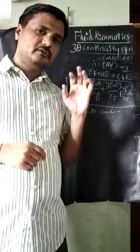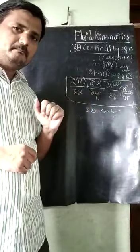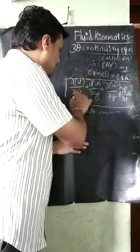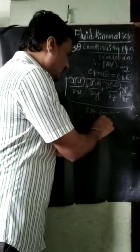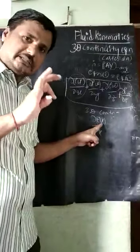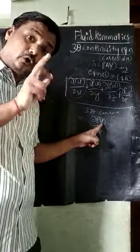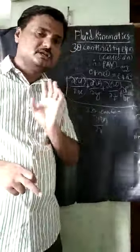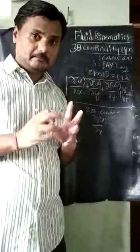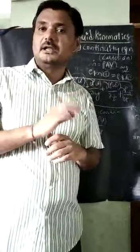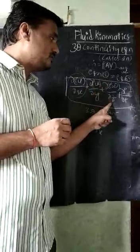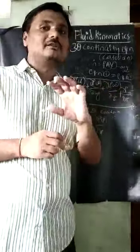If we observe this equation more deeply, take the term ∂(ρu)/∂x. The velocity u along the x direction is changing, and also the density of the fluid is changing in this equation. Because the density is also inside the bracket — we are differentiating density in all the terms. So density is changing along the y direction, along the z direction, and also with respect to time.